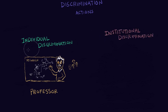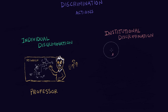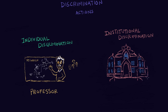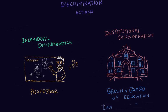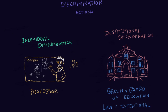On the other hand, we have institutional discrimination. Institutional discrimination is really just an organization discriminating. It's not an individual anymore. This can include governments, banks, schools, any sort of organization. The example we'll look at is Brown versus Board of Education, which was a landmark court case in 1954. In this court case, it overturned the fact that there used to be separate but equal schools, where African-Americans and whites had to go to different schools.